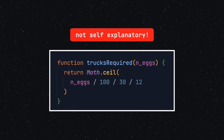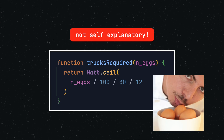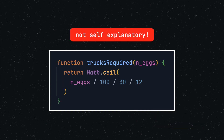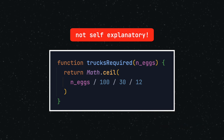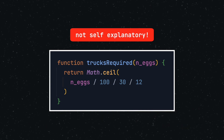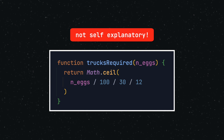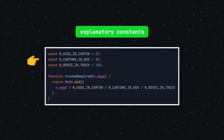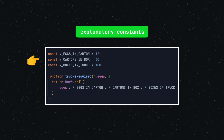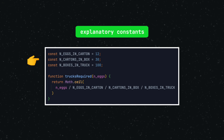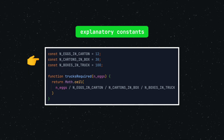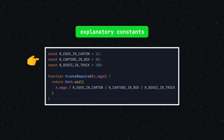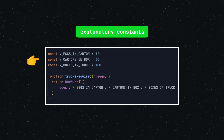They are not self-explanatory. If you disagree, you might have a hidden talent for transporting eggs and should maybe consider switching careers. But for us non-egg experts, we can make this code more self-explanatory by replacing the magic numbers with adequately named constants. These constants are referred to as explanatory constants because their naming conveys the meaning of the corresponding numeric literal. Usually they are defined in all uppercase letters at the top of a function or file, facilitating their review and change.